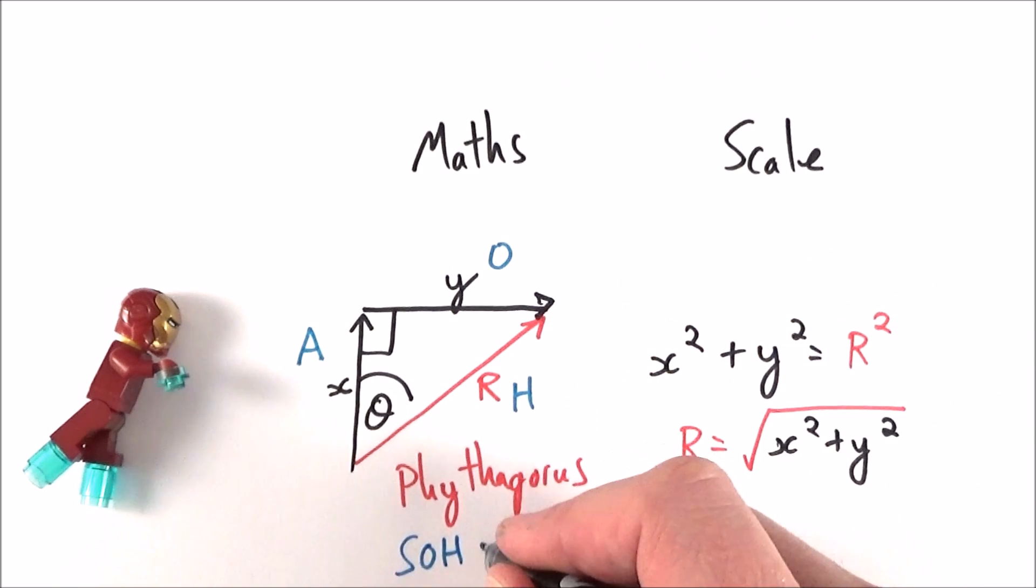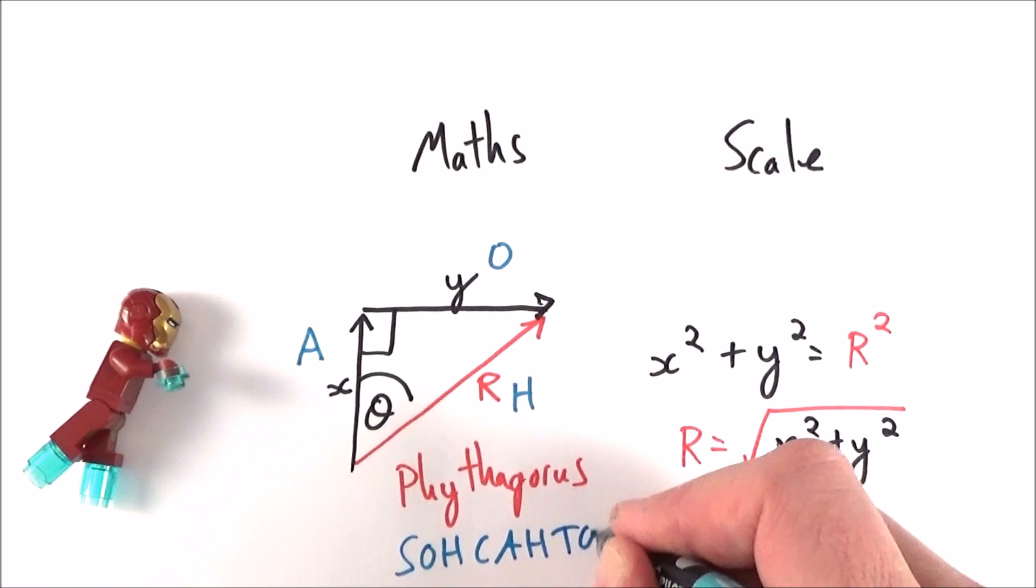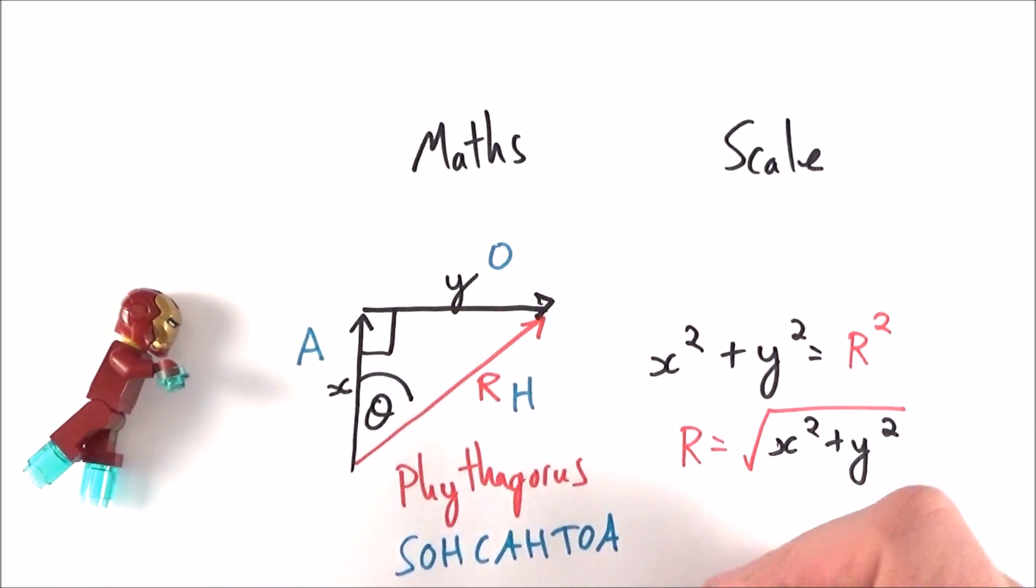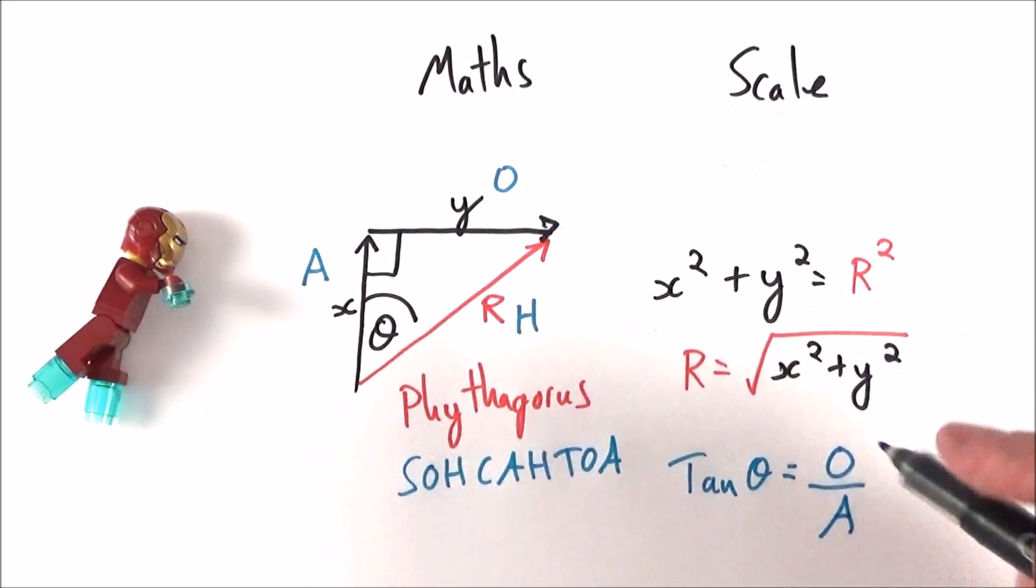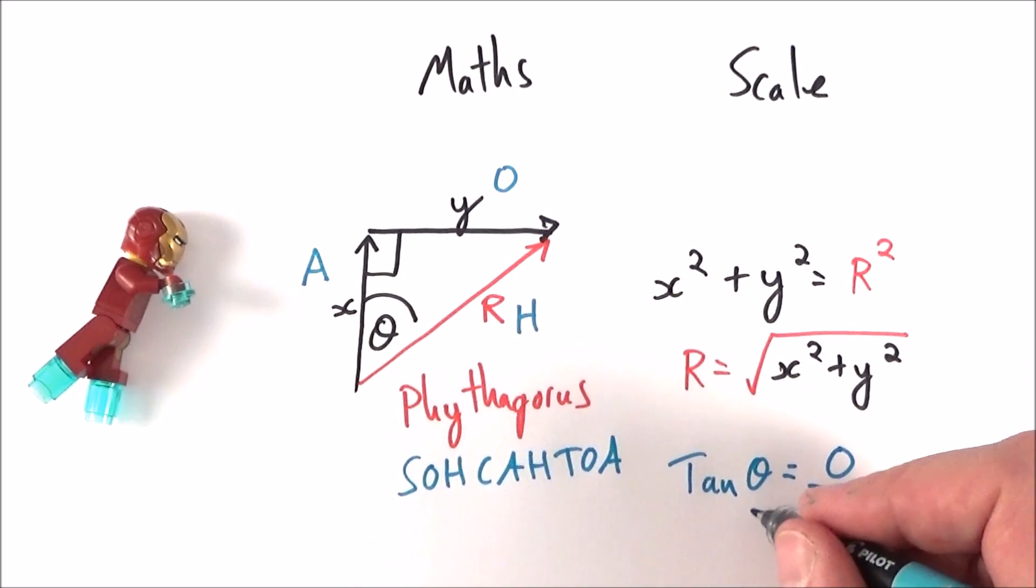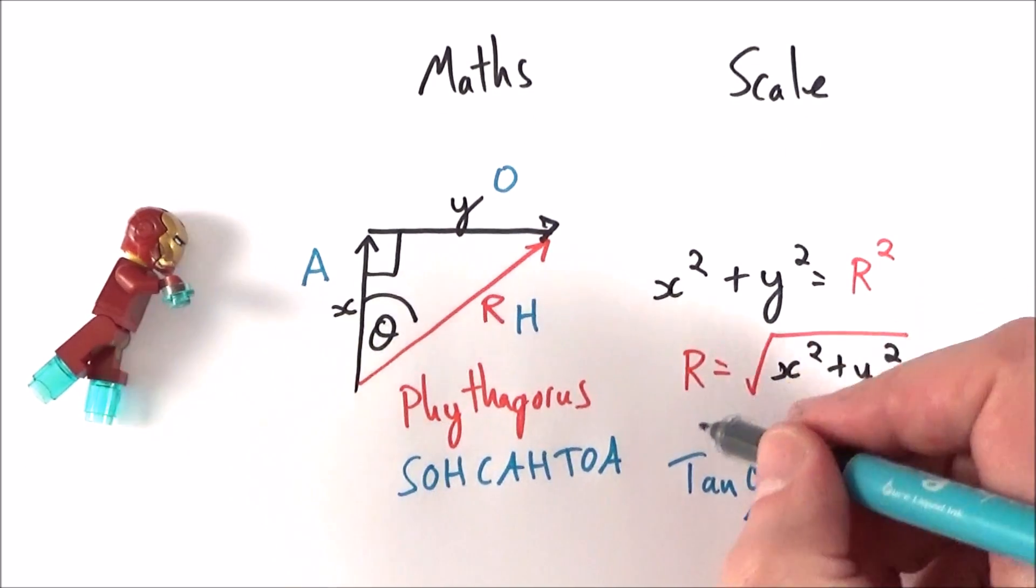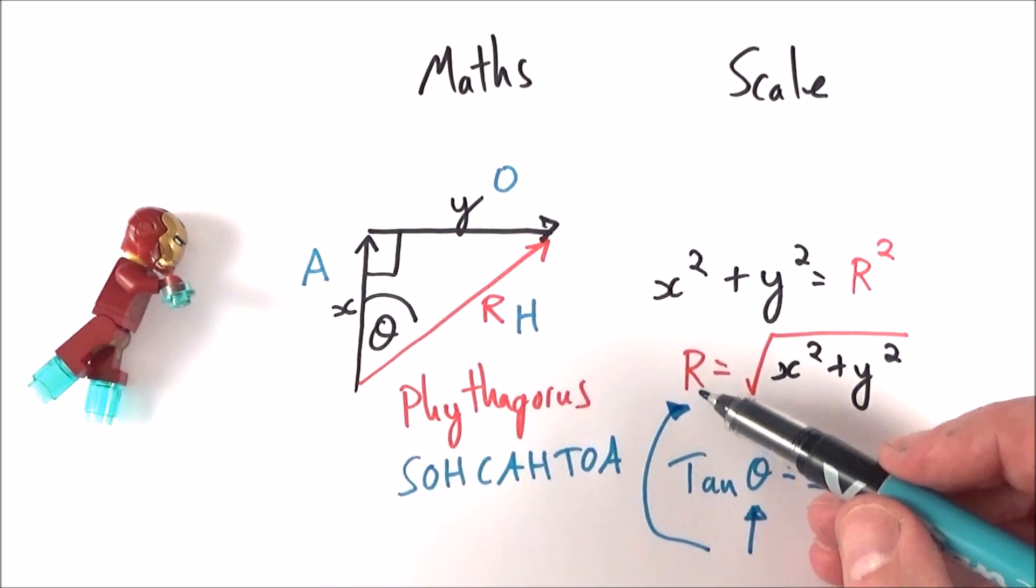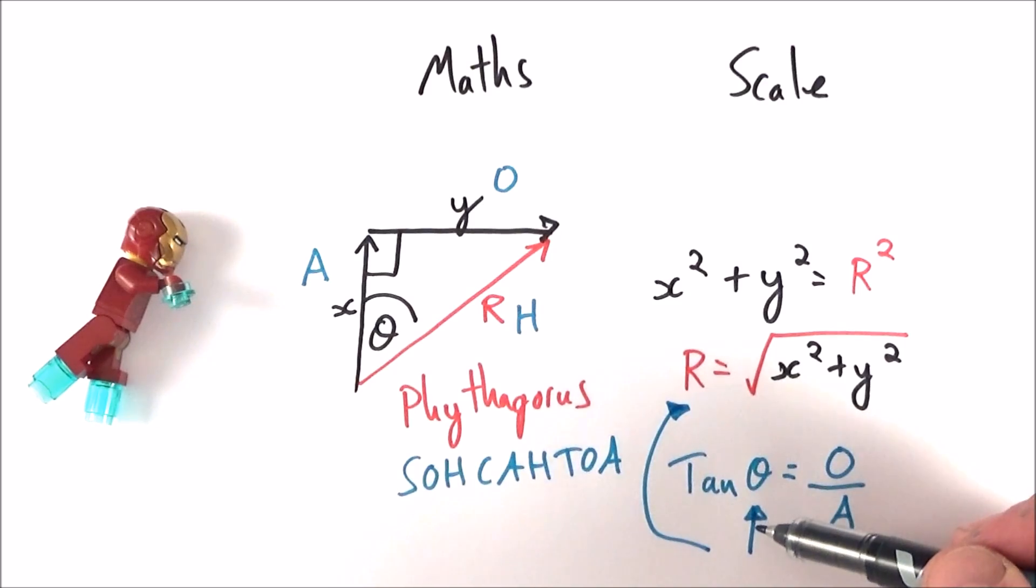So this is using SOHCAHTOA, and for example perhaps we knew the opposite and the adjacent side, we might know that tan theta is equal to the opposite over the adjacent. If we know these values we can put them in and find our value for the direction as well. So this gives us the two things that we need for our vector quantity: magnitude and also the direction.